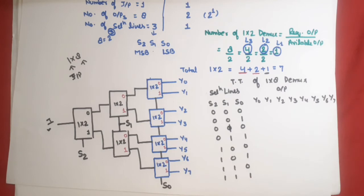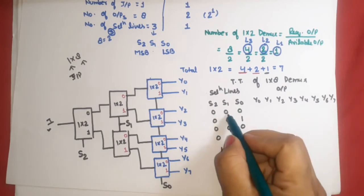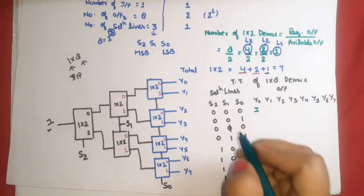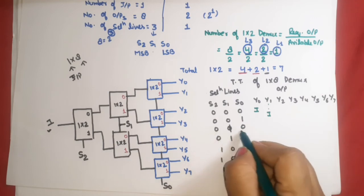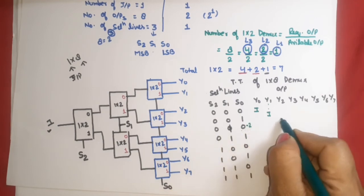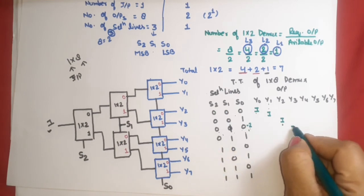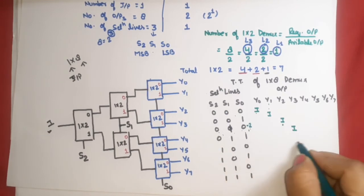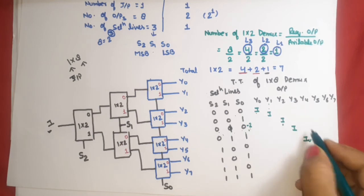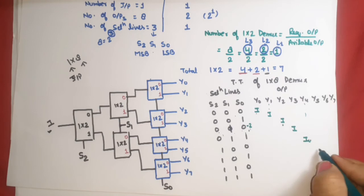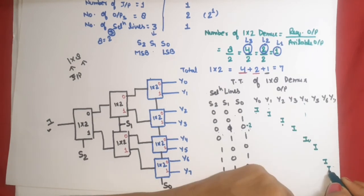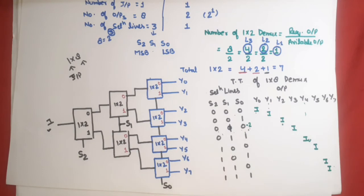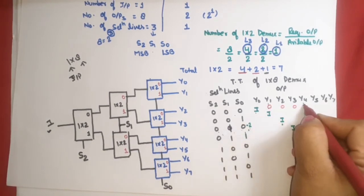When selection is 000, input i is available at y0. When 001, output is at y1. When 010 (equivalent to 2), output is at y2. When 011, output is at y3. When 100 (equivalent to 4), input is available at y4. When 101, at y5. When 110, at y6. And when 111, at y7. At each time, all remaining outputs are 0. This completes the truth table.